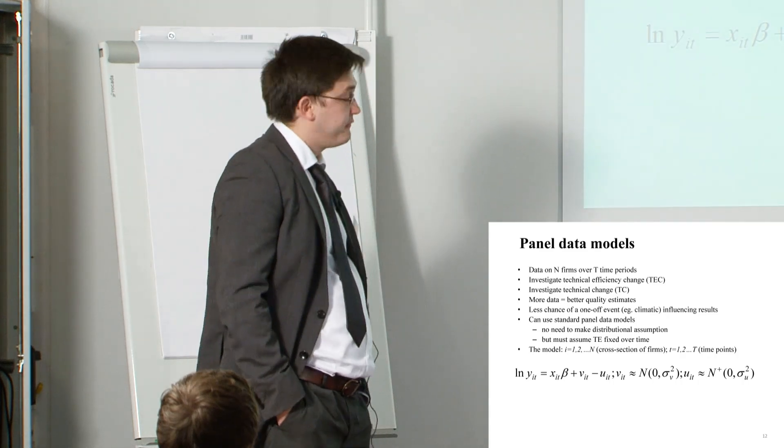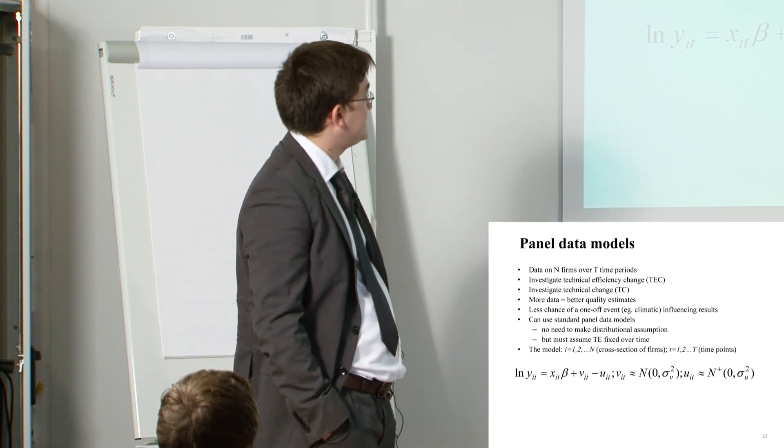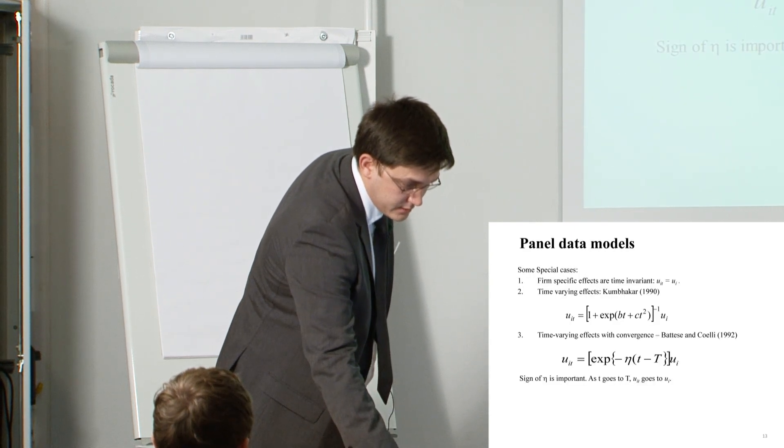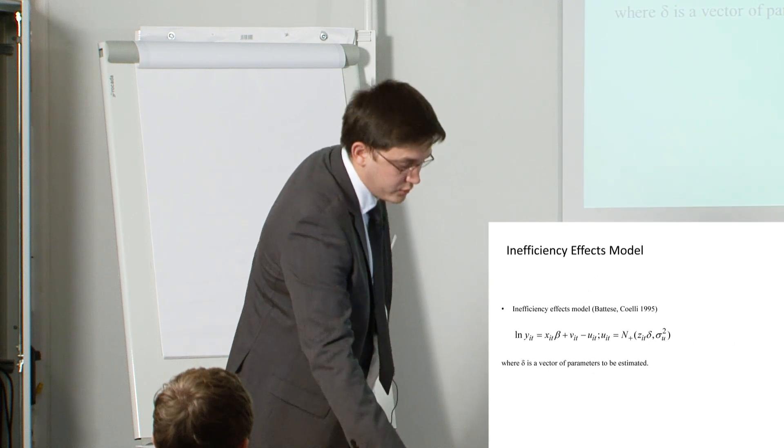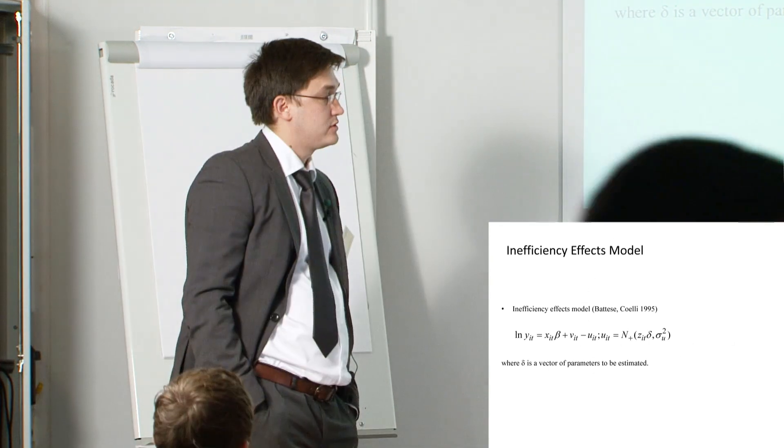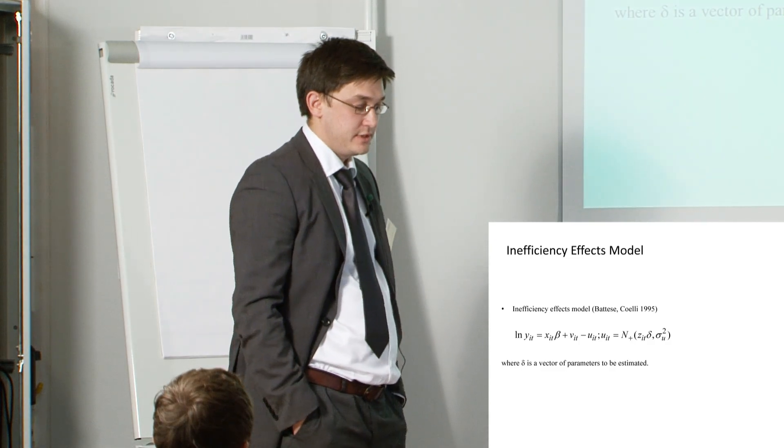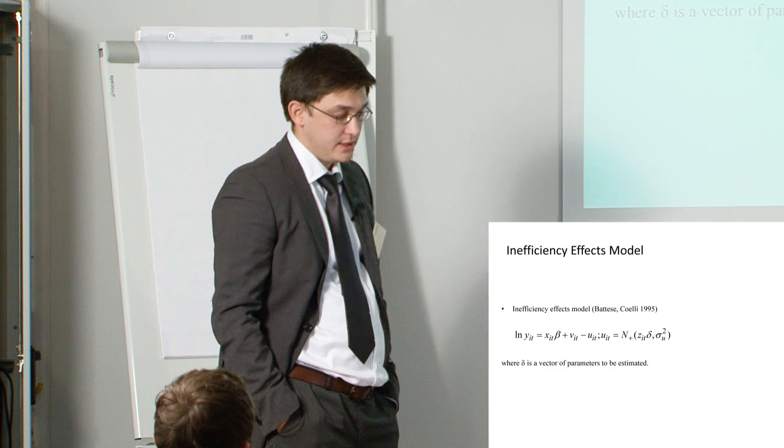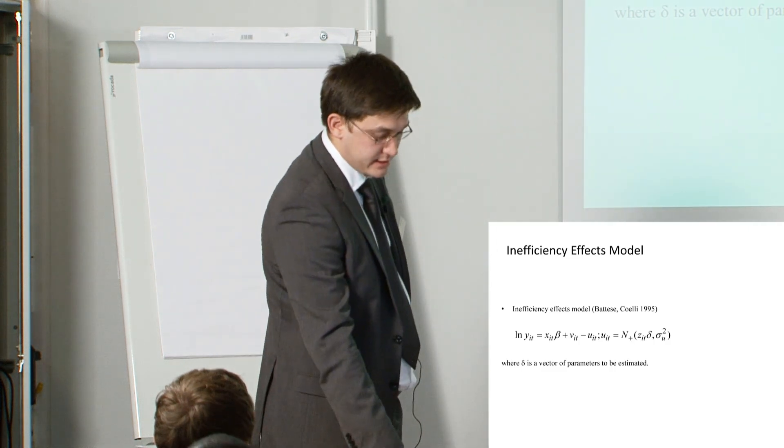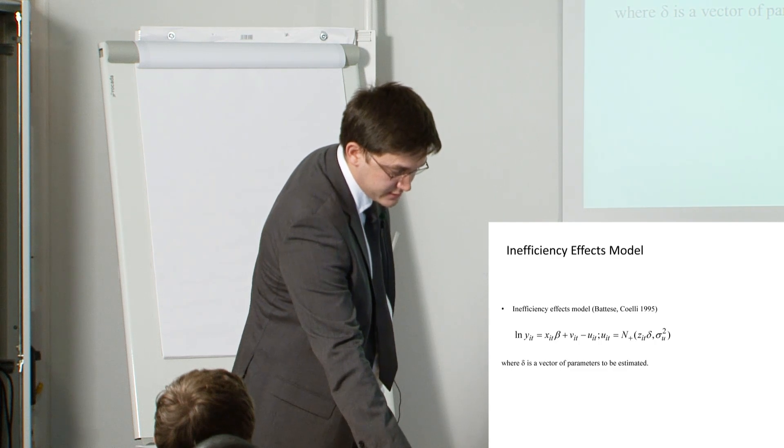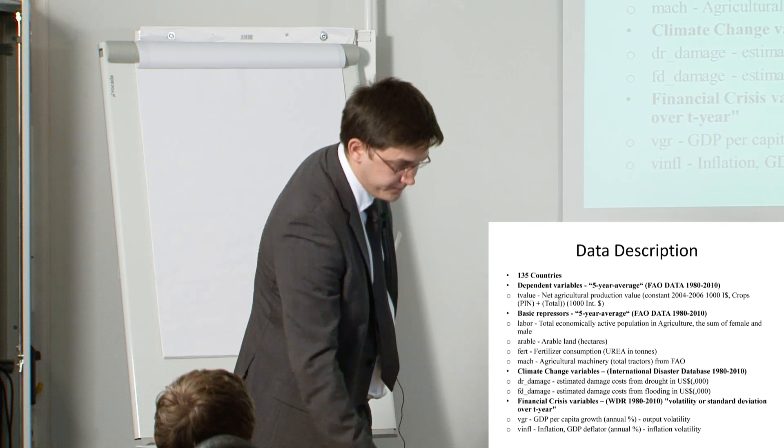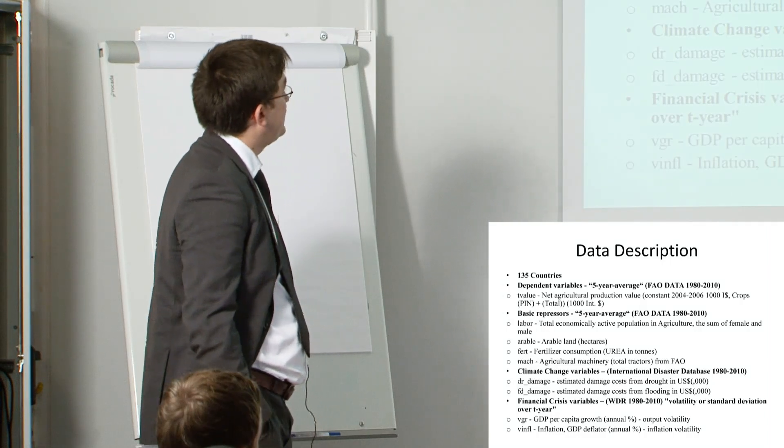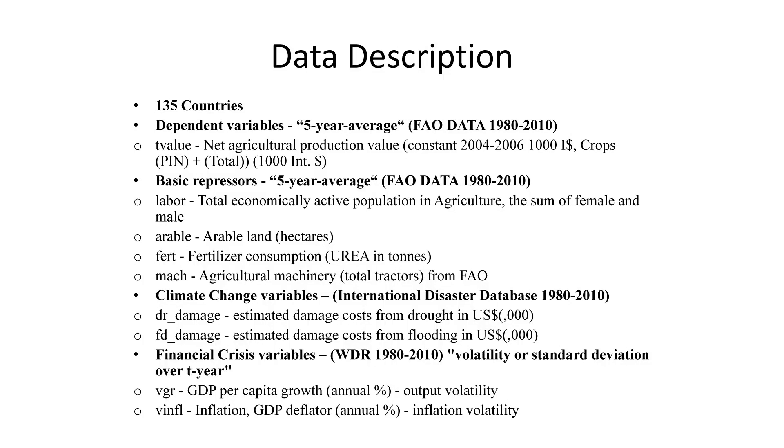So we have panel data for our analysis over several years. We also have the inefficiency effects model. When we derive the technical efficiencies from the model, we use them in one stage in the inefficiency effects model to see variables such as climate variables and financial crisis variables and their impact on technical efficiency.